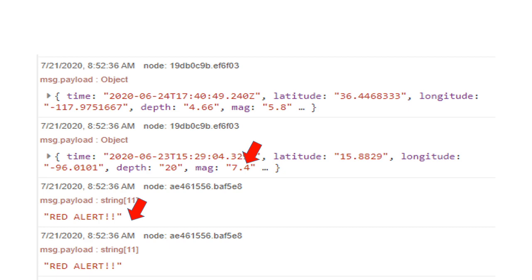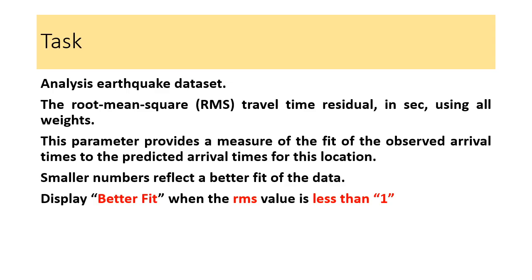This is how we have accomplished today's experiment. As a task, you can analyze the earthquake dataset further. There is a field called RMS, which provides the difference between the observed arrival time and the predicted arrival time. Analyze your dataset and display a 'better fit' message when the RMS value is less than 7. Thank you so much.